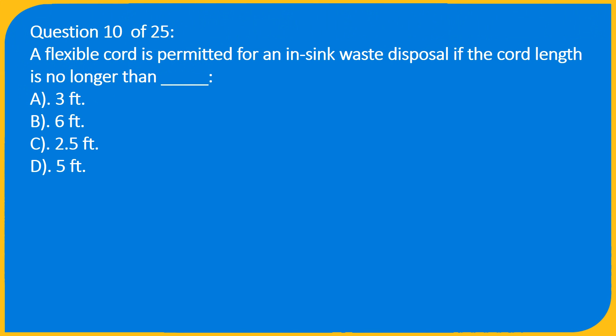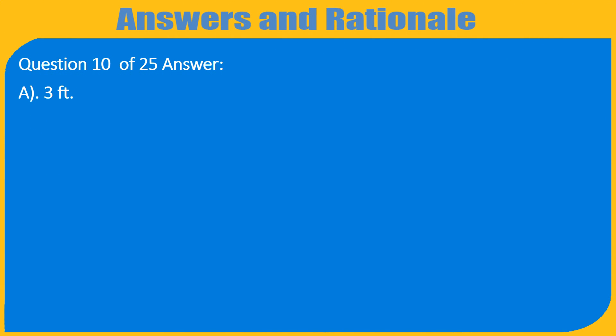Question 10 of 25: A flexible cord is permitted for an in-sink waste disposal if the cord length is no longer than how many feet? A. 3 feet, B. 6 feet, C. 2.5 feet, D. 5 feet. Answer: A. 3 feet.